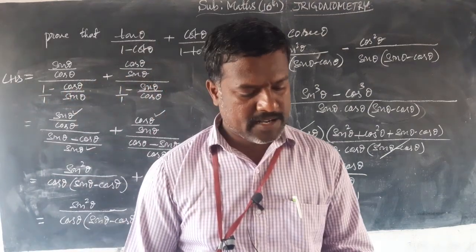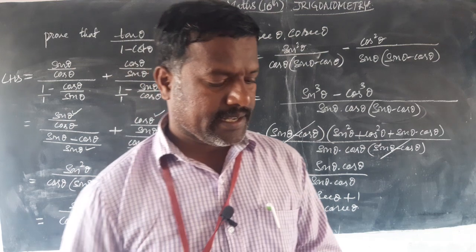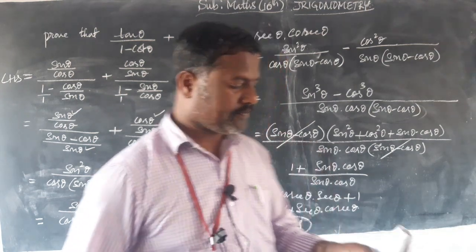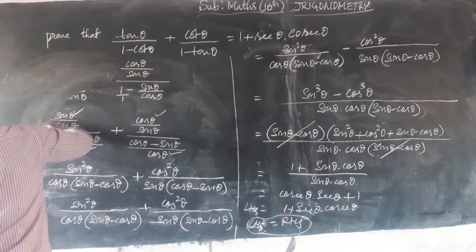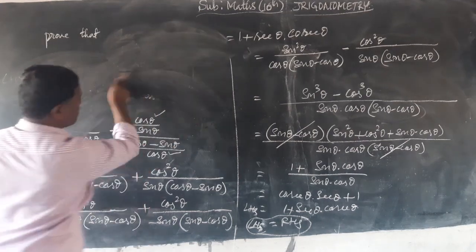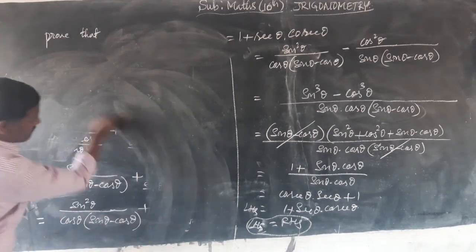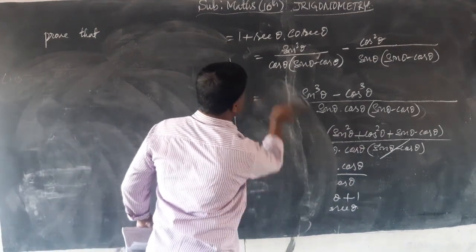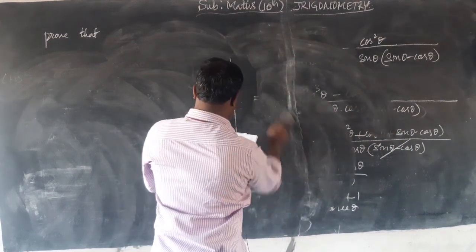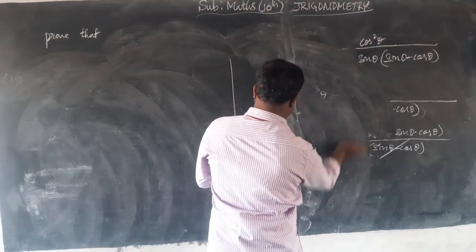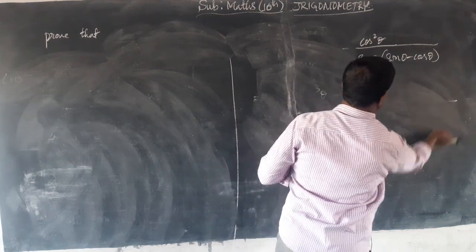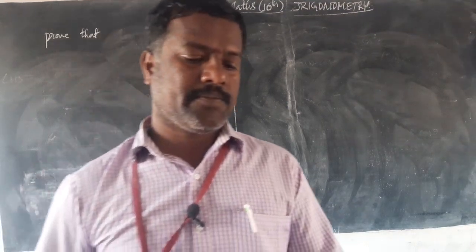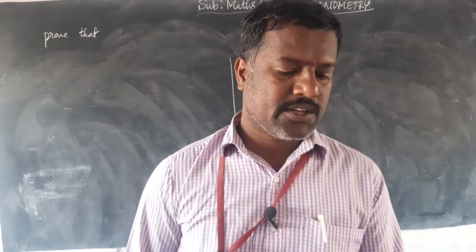Okay, next I shall take up in the same exercise the fifth problem. Here also we should use the identities — using the identity cosecant squared theta.